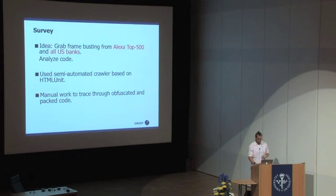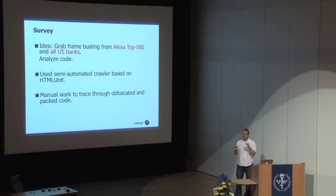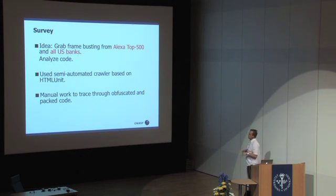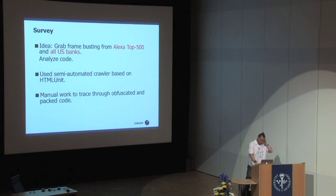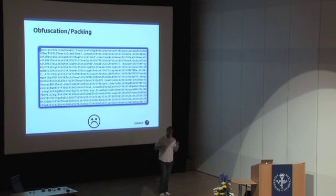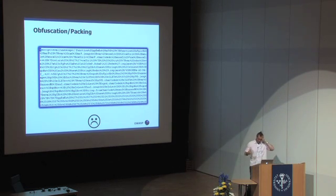Our survey idea was to look at the Alexa Top 500 and all U.S. banks — grab all their frame-busting code, see if it's safe, whether there's some standard practice, and whether we can improve on it. We used a semi-automated tool based on HTML Unit, a JavaScript emulator. It wasn't that helpful, so a lot of it was manual work. The biggest reason being that a lot of pages look like a nightmare trying to find frame-busting code, with packing things that structure code very strangely.